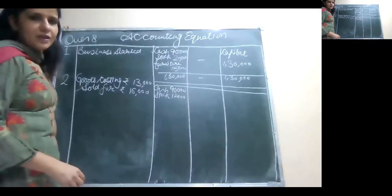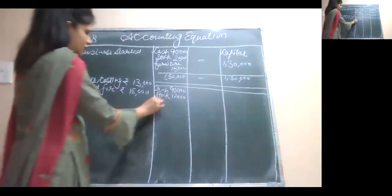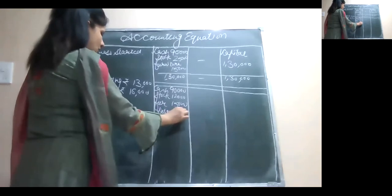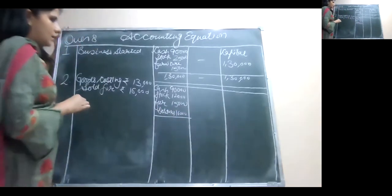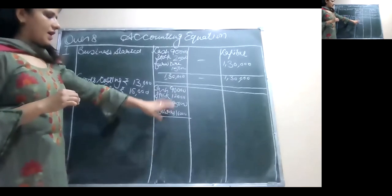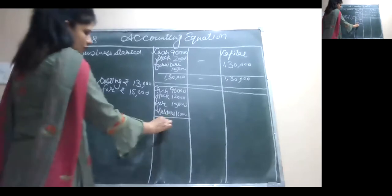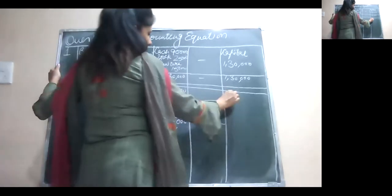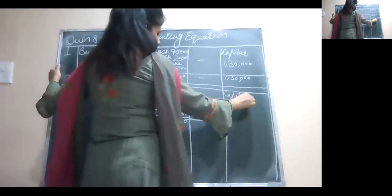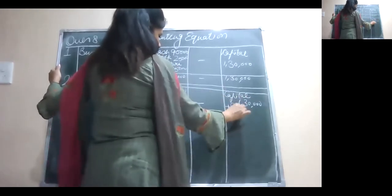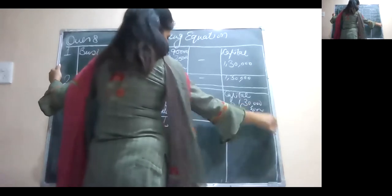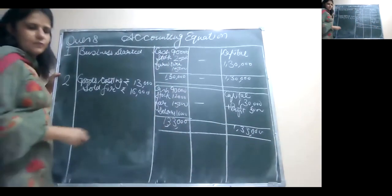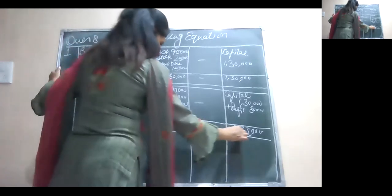After deducting 13,000 from 25,000, we still have stock of rupees 12,000. Furniture is same. So debtors, we have 16,000. Overall, the total will increase because if I minus 13,000, I add 16,000. Overall, 3,000 se total badega. So this will be 133,000. Liabilities are nil. And what about our capital? Capital originally was 130,000 add profit on sale of goods, and that profit was 3,000. So your capital is matching with total of your assets. Once again, your accounting equation gets satisfied.